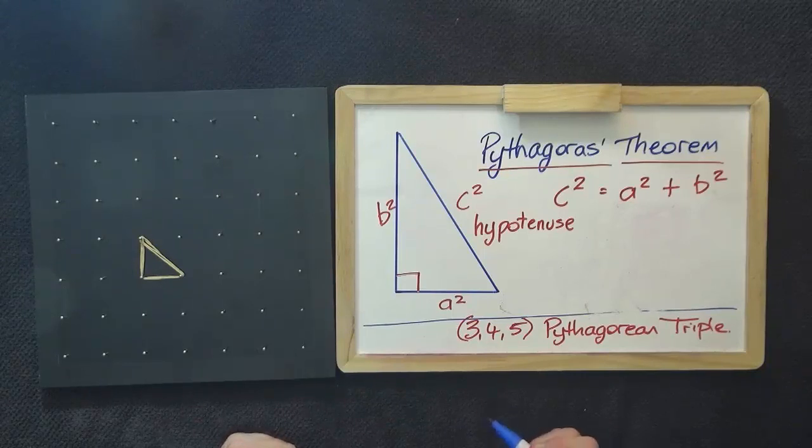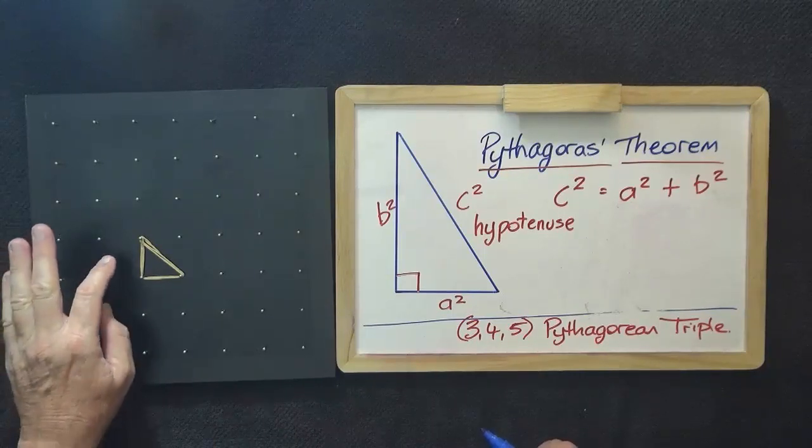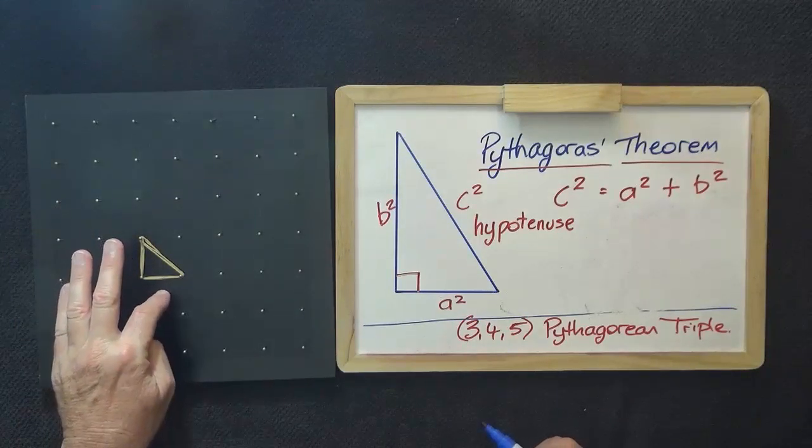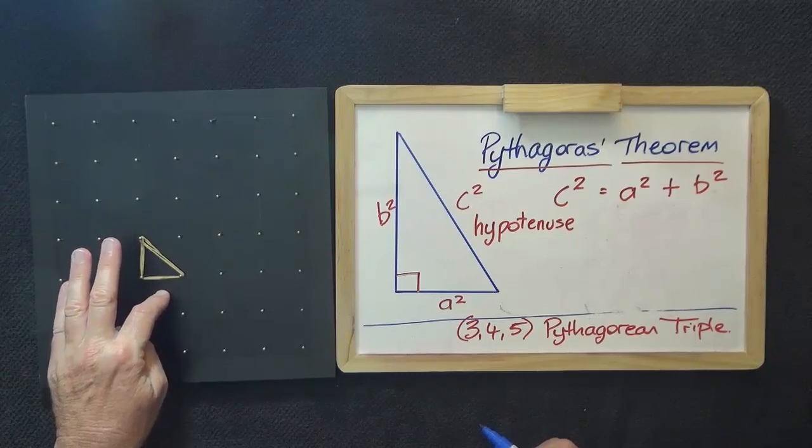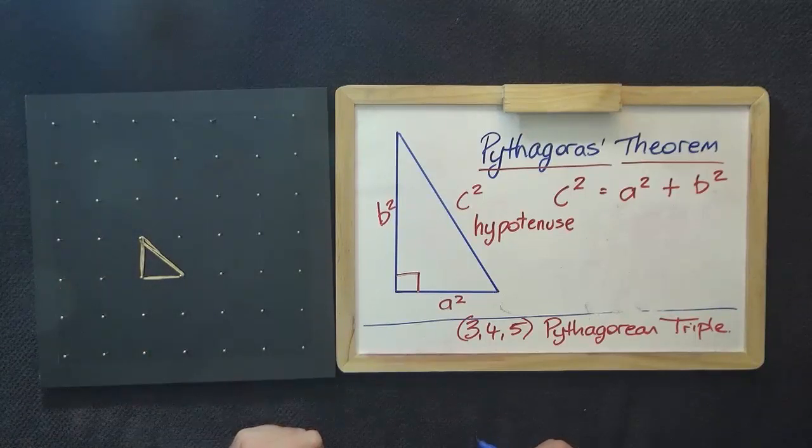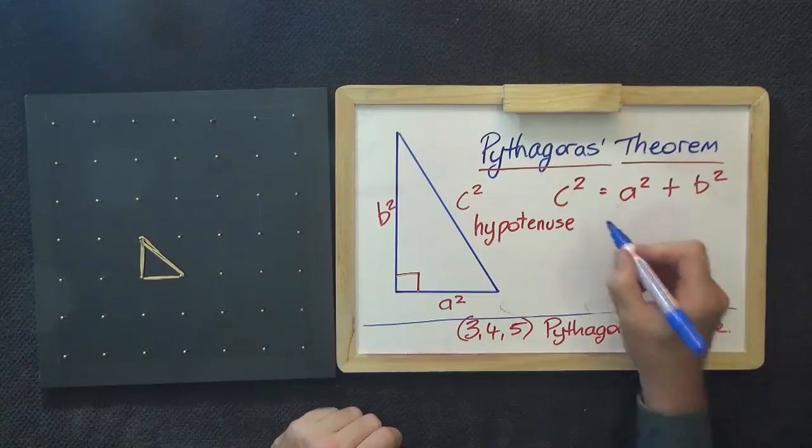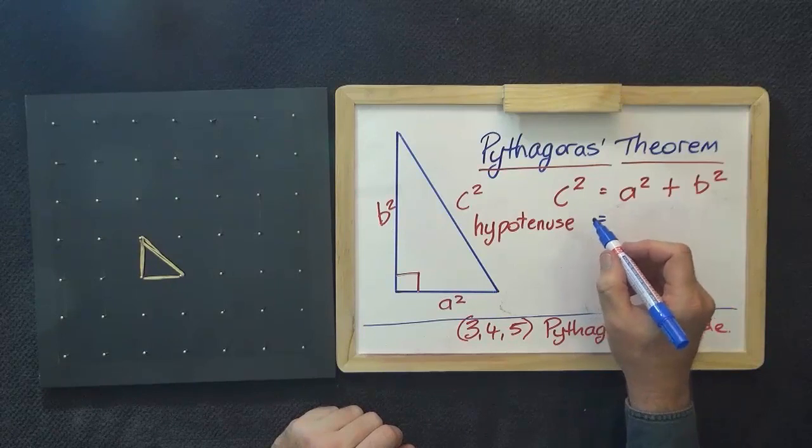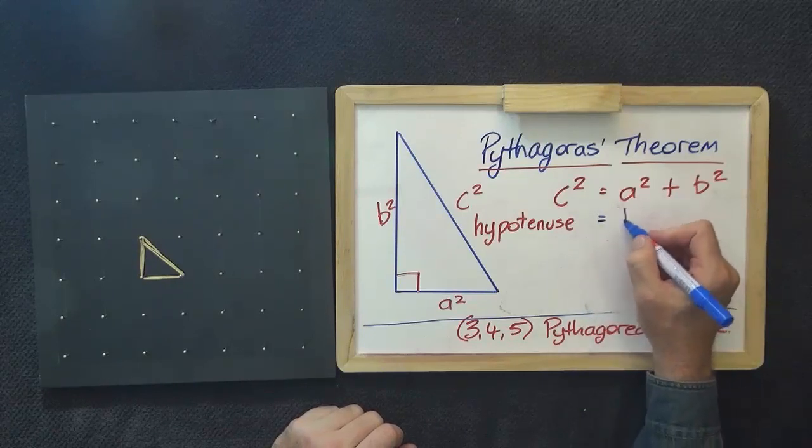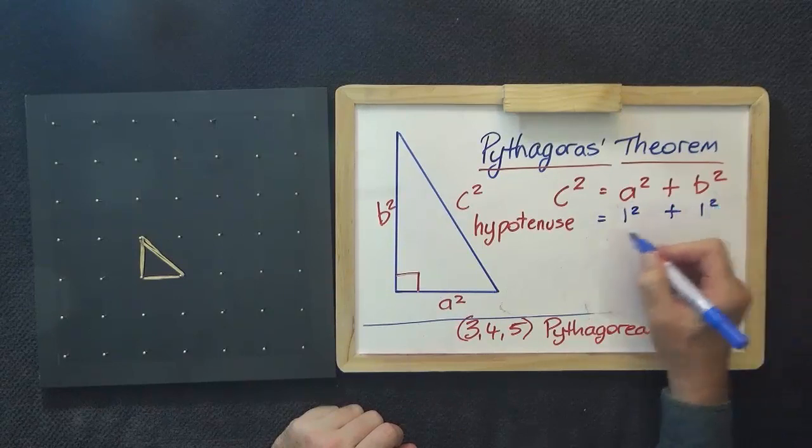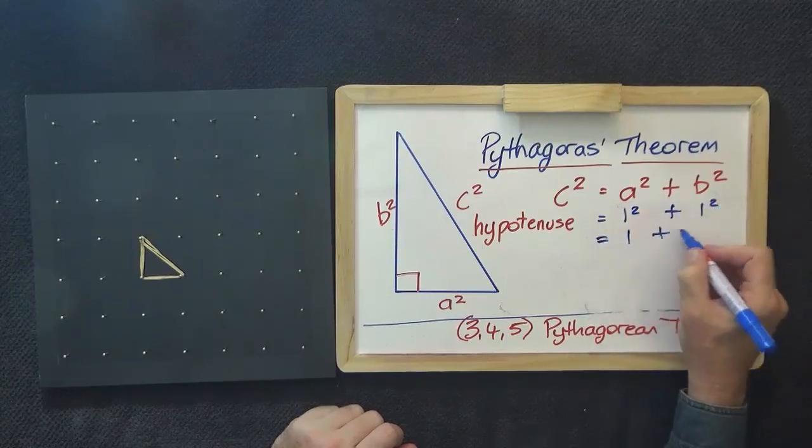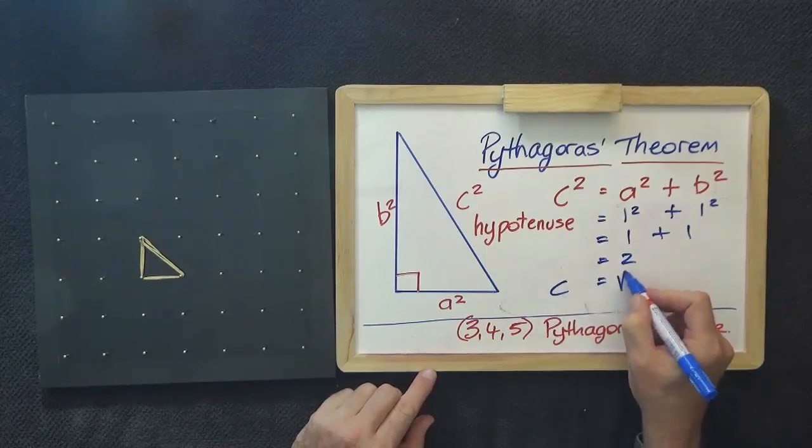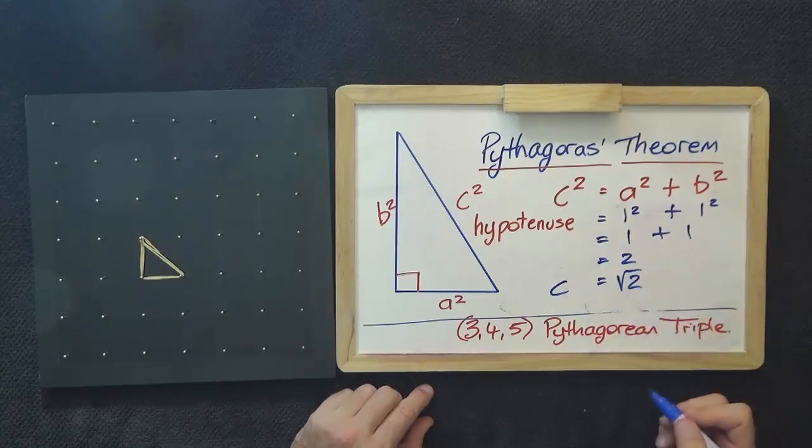For a fourth example, I'd like to use this one. This is a height of 1 and a base of 1. It's an isosceles right triangle. So we can use our formula just the same. C squared equals 1 squared plus 1 squared. 1 plus 1 equals 2. And C equals root 2.